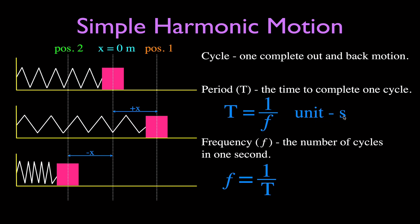The period is measured in seconds — that's the base unit for time in the metric system. Frequency is a little different; it's measured in Hertz, for the number of cycles per second. Sometimes you'll see s to the minus one or one over s, but most commonly it's measured in Hertz, abbreviated as capital Hz. That is the definition for cycle, period, and frequency.